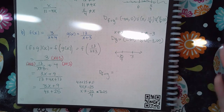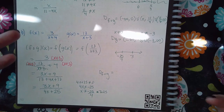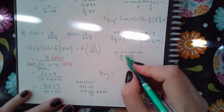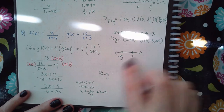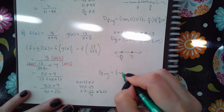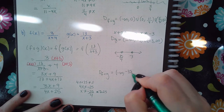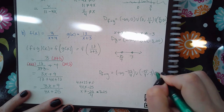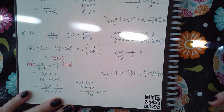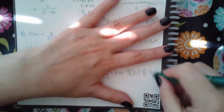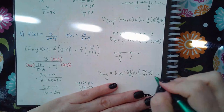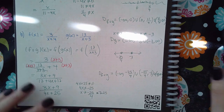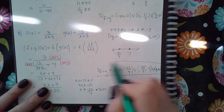Since negative 3 is here and negative 25 over 4 is over to the left, it's important to know which is on the left and which is on the right, otherwise your domain will be incorrect. So we remove both values, giving us: negative infinity to negative 25/4, then negative 25/4 to negative 3, and then negative 3 to positive infinity. This is the final domain for the function.